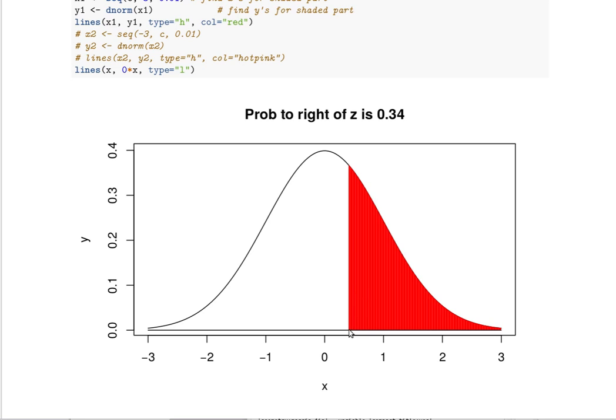We're looking for this Z value right here, so that 34% of the probability, 0.34, is to the right of that particular Z value.